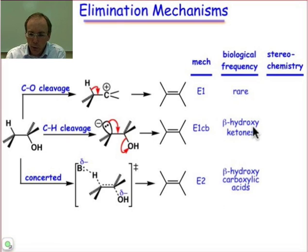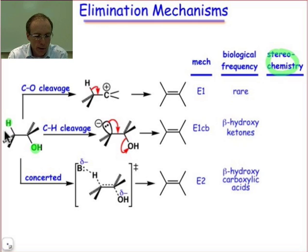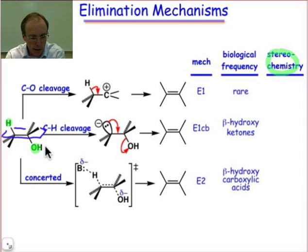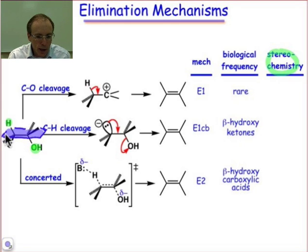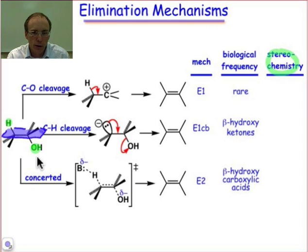We're also going to look at the stereochemistry in some detail. When we talk about stereochemistry, we're talking about whether or not the hydroxide and the hydrogen atom are on the same side or on opposite sides of the plane that contains the carbon-carbon single bond, which gets converted into the carbon-carbon double bond. As they're shown here, this would be the opposite side — that would be anti-elimination. And if they were on the same side, that would give rise to the syn elimination.